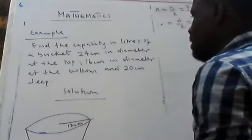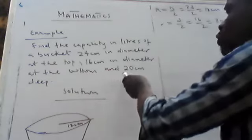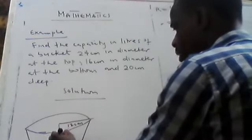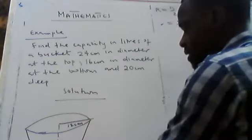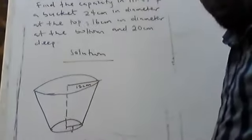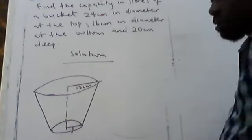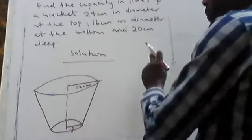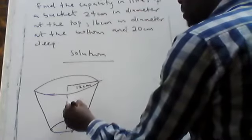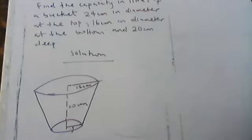At the bottom, the bucket is 20 centimeters deep. Deep means the height of the bucket — how deep it is, that is the height. So 20 centimeters deep means the height of the bucket is 20 centimeters.